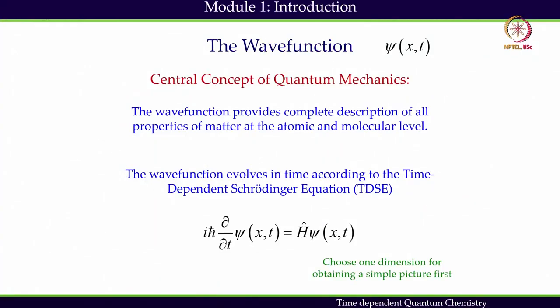Quantum mechanics governs the structure, dynamics, and physical and chemical properties of matter at the atomic and molecular level. In quantum mechanics, the wave function is denoted by ψ(x,t). For simplicity, we have considered one dimension. Once we understand the one-dimensional problem, we will be able to move on to the three-dimensional problem.